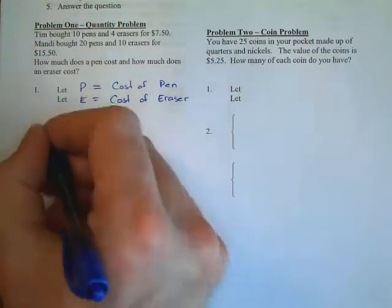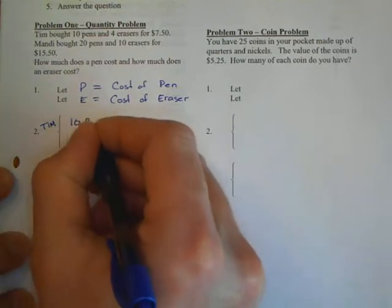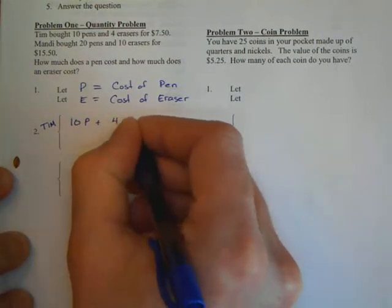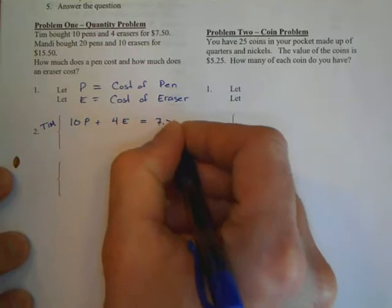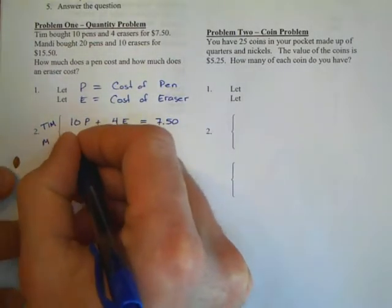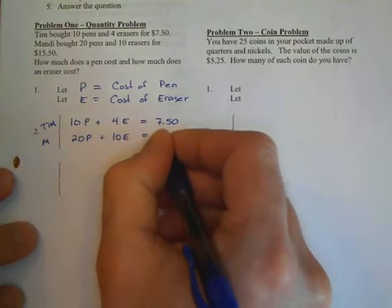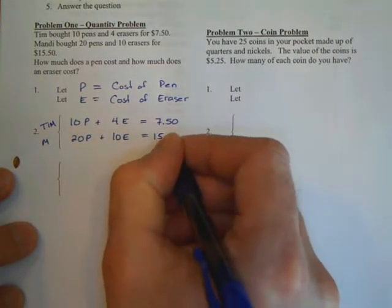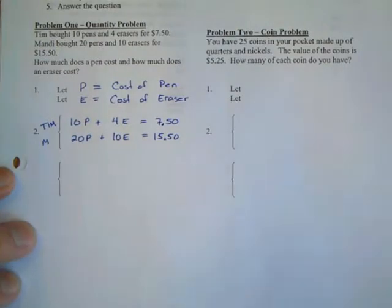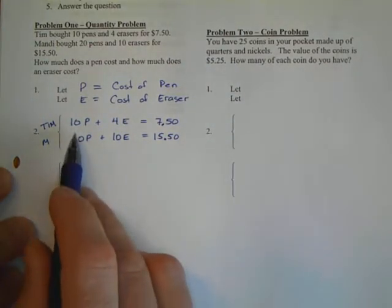We now write two equations regarding our situation. Our first equation is about Tim: 10P + 4E = 7.50. Mandy bought 20 pens and 10 erasers, so 20P + 10E = 15.50. We now have a system of equations that we're going to try to solve.